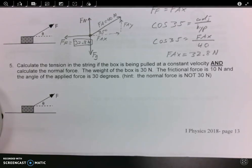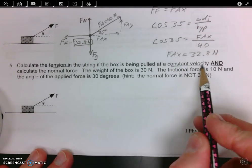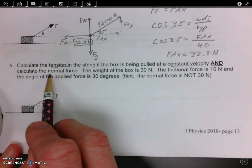Now, problem 5 is a pretty involved problem, so let's go one step at a time. Calculate the tension in the string if the box is being pulled at constant velocity, and calculate the normal force.